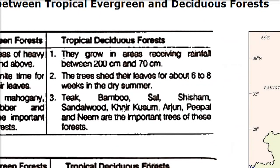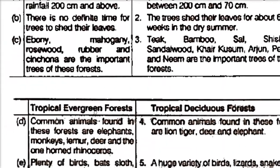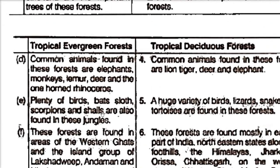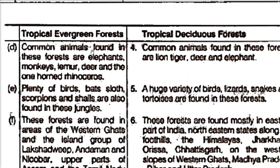In tropical deciduous forests, the important trees include teak, bamboo, sal, shisham, sandalwood, kharkusum, arjun, peepal, and neem.